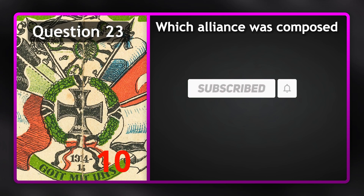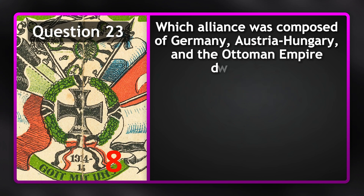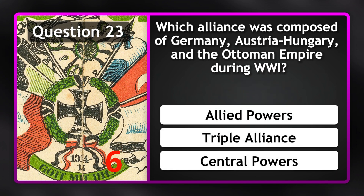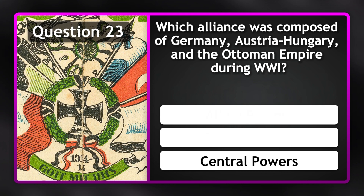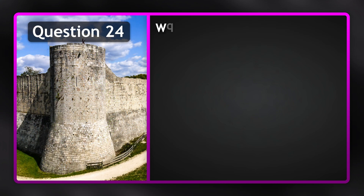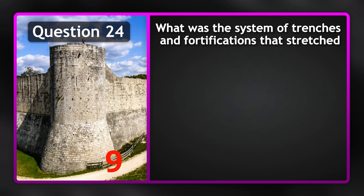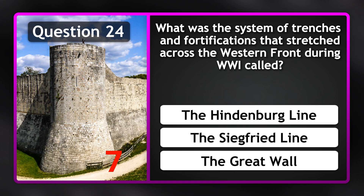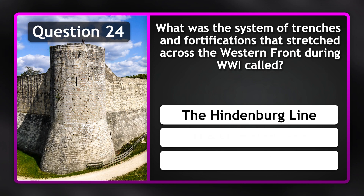Which alliance was composed of Germany, Austria-Hungary, and the Ottoman Empire during WW1? Central Powers. What was the system of trenches and fortifications that stretched across the Western Front during WW1 called? The Hindenburg Line.